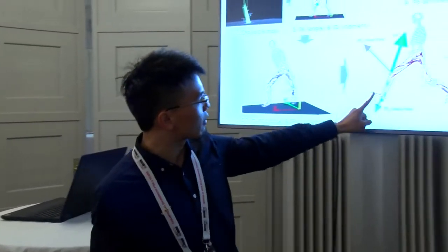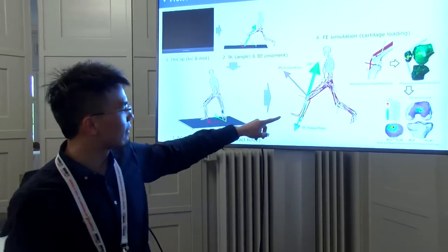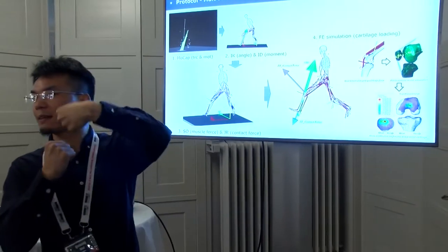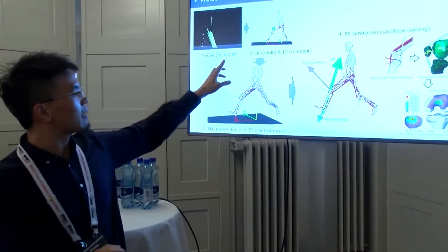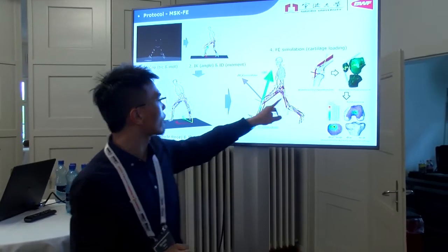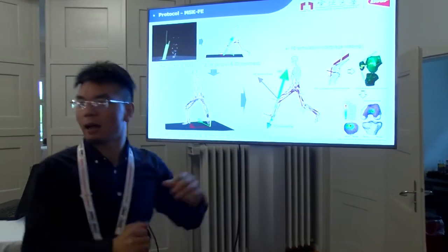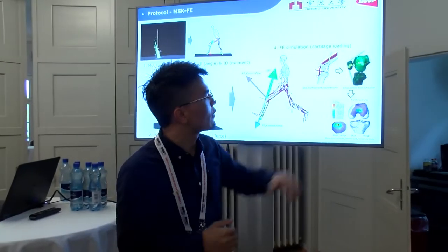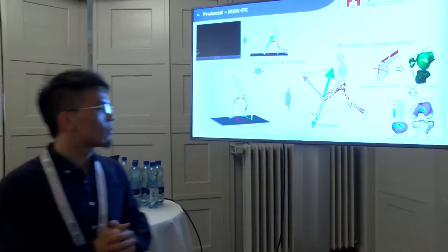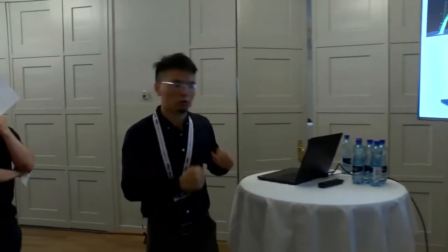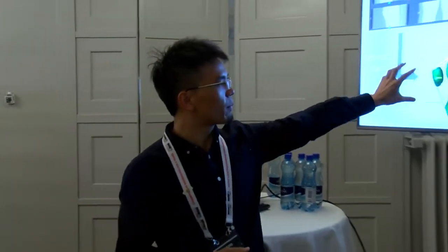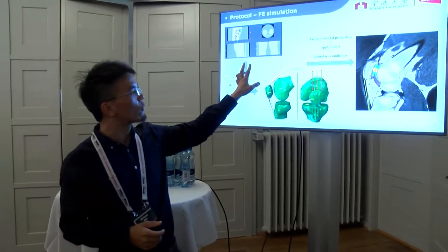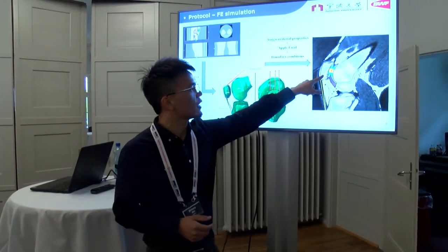The next step is the finite element analysis. The green arrow going up is the ground reaction force, the dark green represents the tibiofemoral contact force — that's the knee joint contact force — and the blue arrow going up is the patellofemoral contact force. From the kinematics I obtained the knee joint positions, and the quadriceps force was applied as the boundary condition for the finite element model simulation to examine cartilage stress. You can see the cartilage stress distribution from the model.